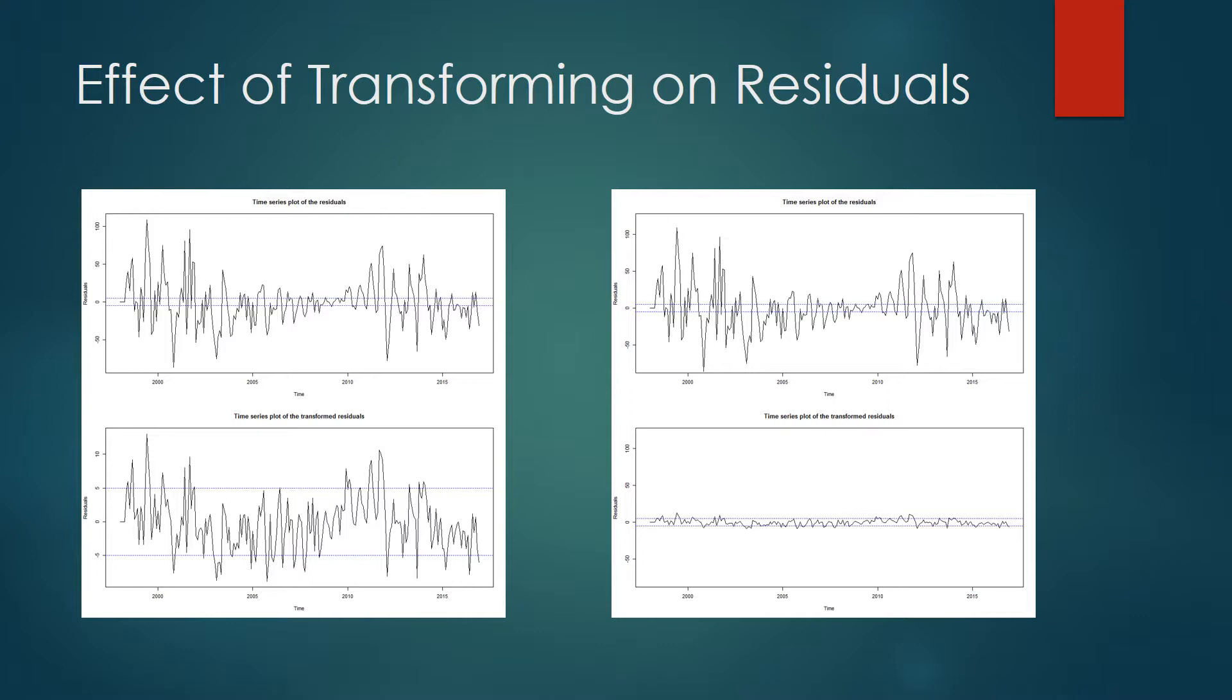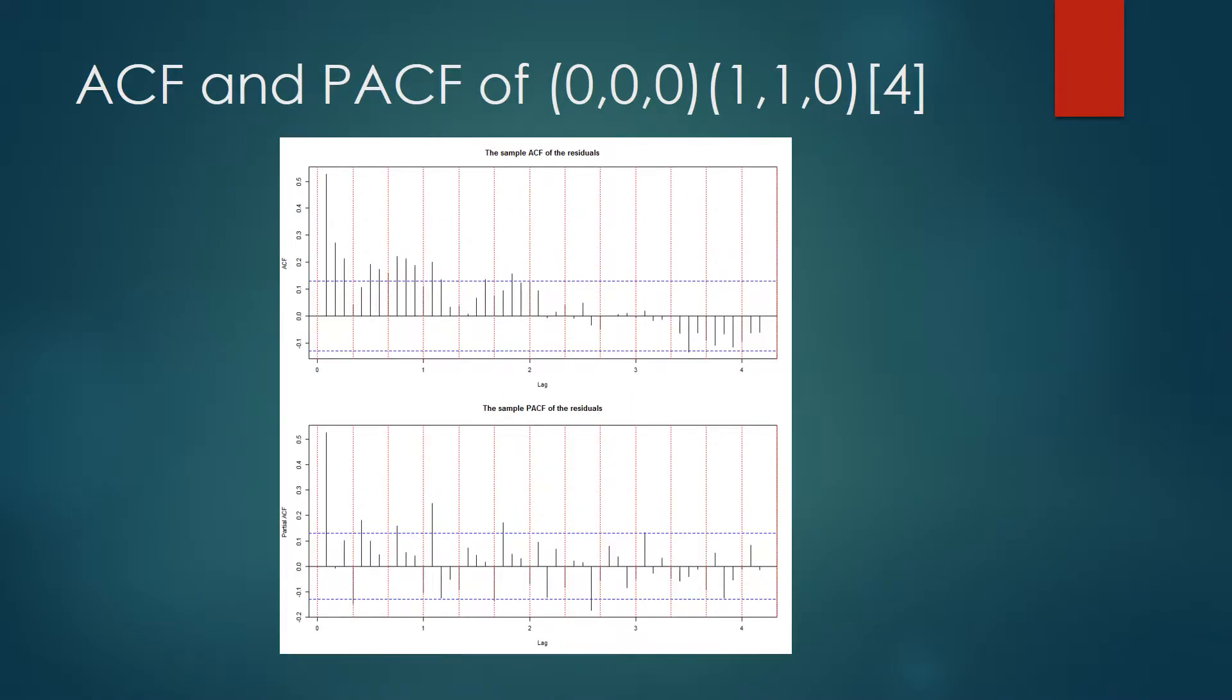The effect of the Box-Cox transformation is that the changing variance has been stabilized, as evidenced from the two charts on the left. It has also had the effect of generally reducing the variance, as seen in the charts on the right, which use the same y-axis scale in both plots. The transformation and inclusion of a seasonal AR parameter has completely removed all seasonal lags in the ACF plot, and almost entirely removed them from the PACF plot.